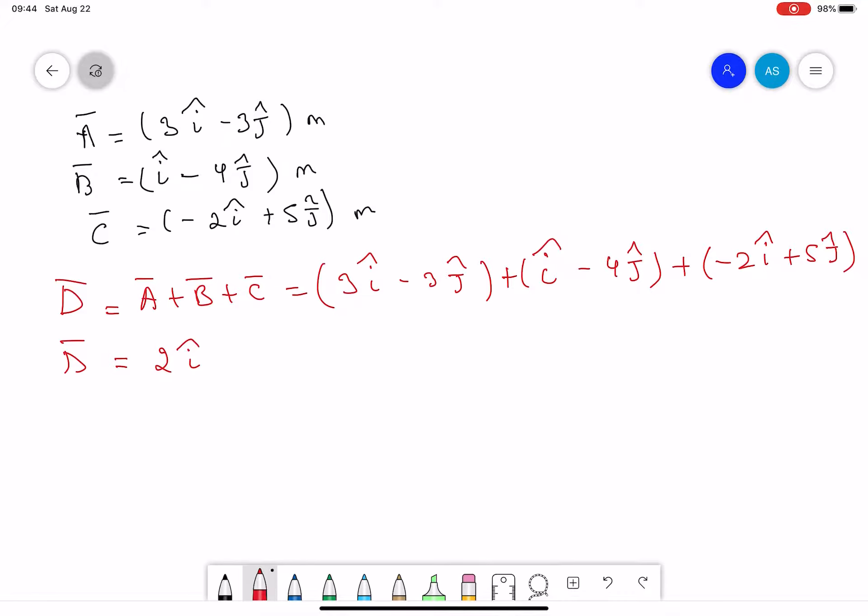Now what about j vector? So -3 minus 4 gives you -7, plus 5 means -2j vector. Okay, so this is how we expressed our D vector in terms of i and j.